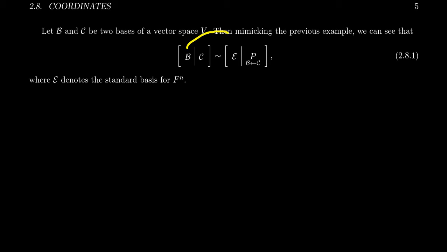B will transition into the standard basis because B is a basis. We've seen this before — as we were trying to check whether a set of vectors is linearly independent, when you row reduce it, it'll turn into the standard basis. There is a little bit of a caveat, because you could get the standard basis over a bunch of rows of zeros or something like that.